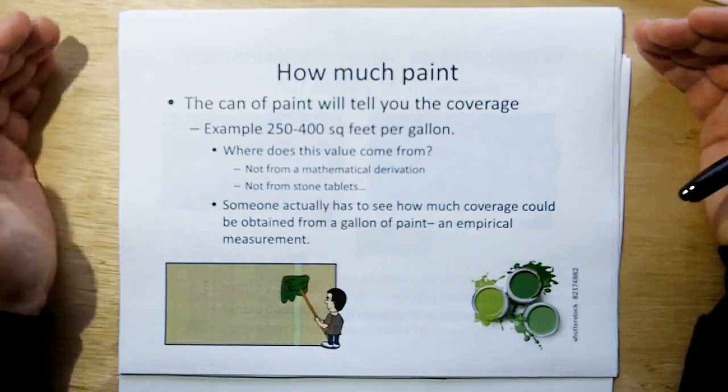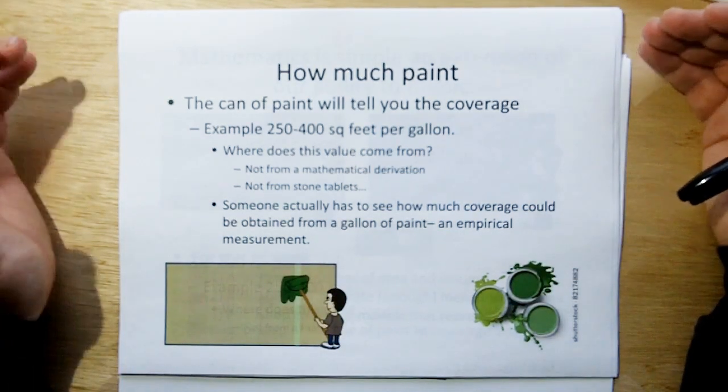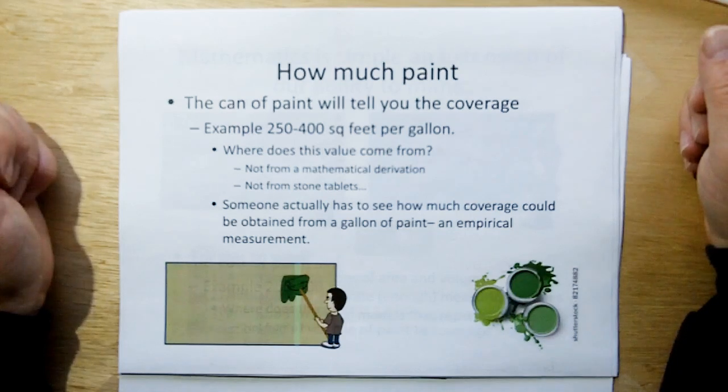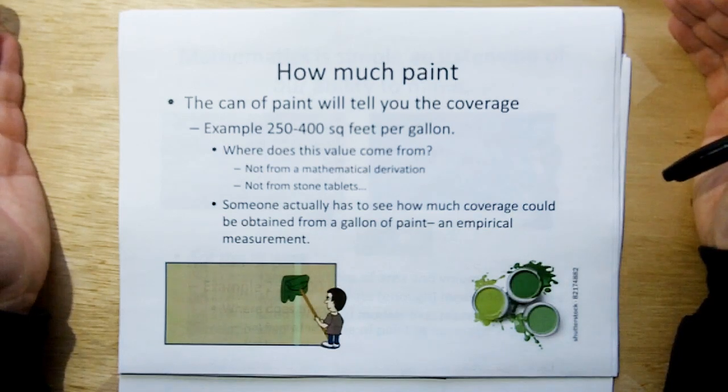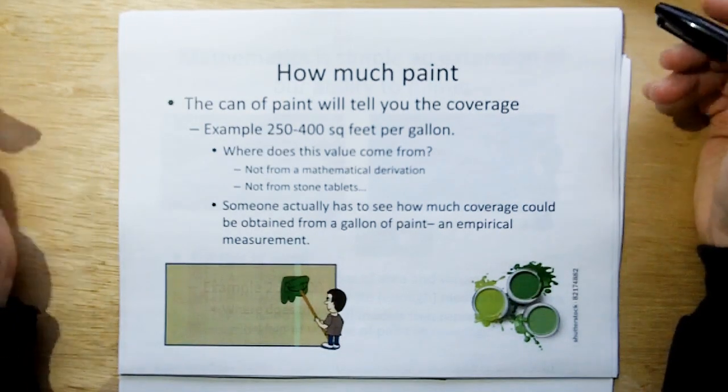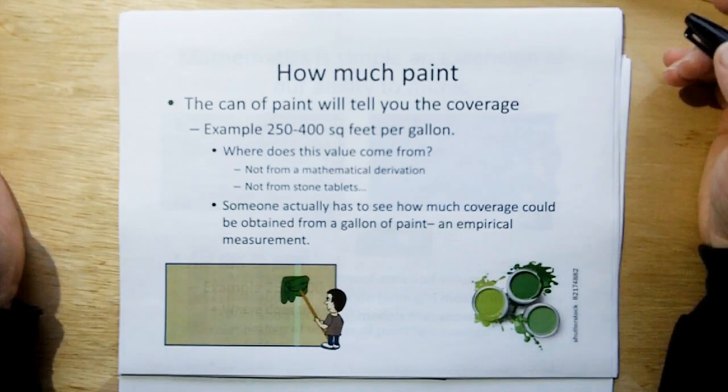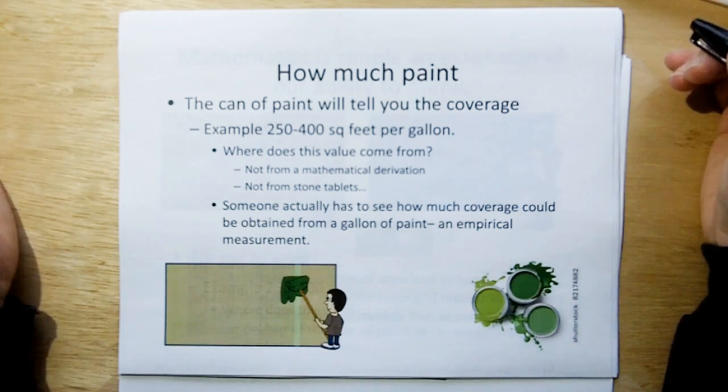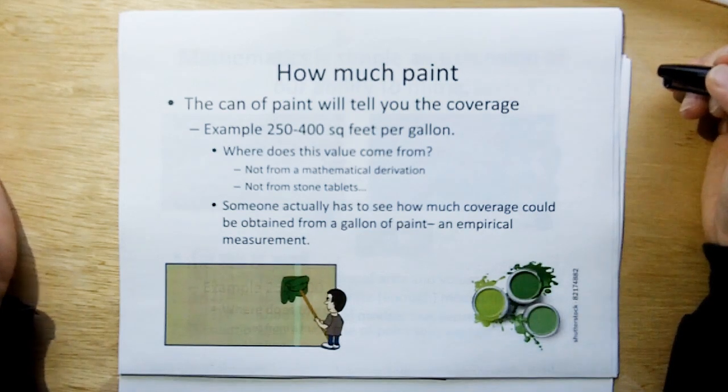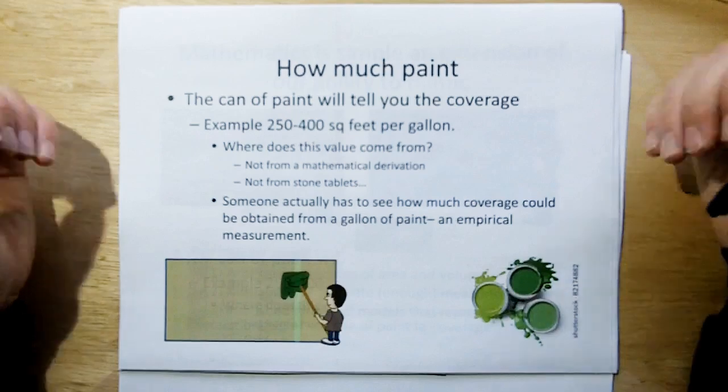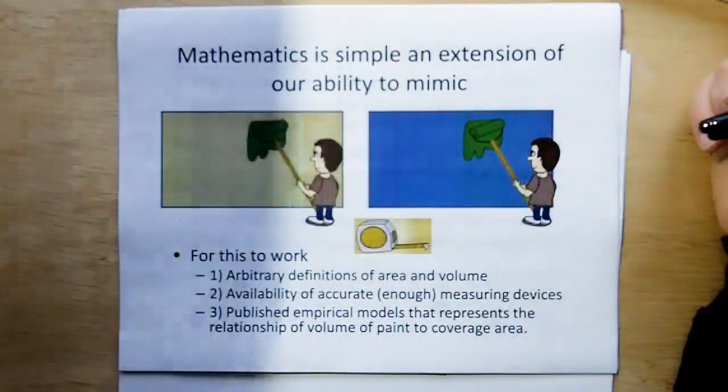And the can of paint on the side is going to tell you that this type of paint can cover 250 to 400 square feet per gallon. But where does this number come from? It's not a mathematical derivation. It wasn't handed to us by God on stone tablets. No. At the paint manufacturing company, they sent some poor old slob out with a paint bucket and a brush, and probably laid out a whole bunch of sheetrock on the ground, and said, keep on painting until you run out of paint. And then we're going to figure out how much square area that gallon of paint covered. So it's as simple as somebody making another empirical measurement.